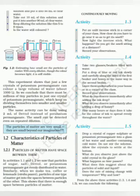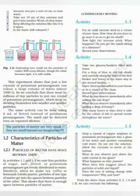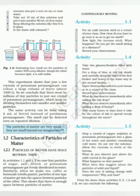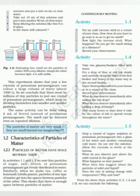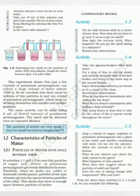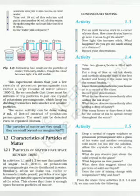In activity 1.4, take two beakers filled with water. Add blue or red ink slowly and carefully along the side of the first beaker, and honey into the other. Leave them undisturbed for a while and record your observations. Immediately after adding ink, you can observe that the ink starts getting mixed with the water. Honey also mixes with the water, but takes much more time — possibly hours or days — for the color to spread evenly.